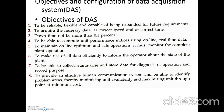The fourth objective is to be able to compute unit performance indices using online real-time data. The fifth is to maintain online optimum and safe operations by monitoring the complete plant operation. The sixth is to make use of all data efficiently to inform the operator about the state of the plant. The seventh is to collect, summarize, and store data for diagnosis of operation and record purposes. The eighth and last is to provide an effective human communication system and be able to identify problem areas, thereby minimizing unit unavailability and maximizing unit throughput at minimum cost.